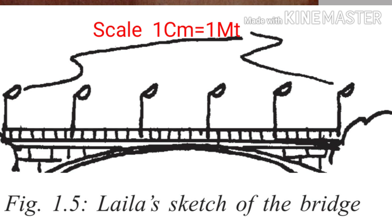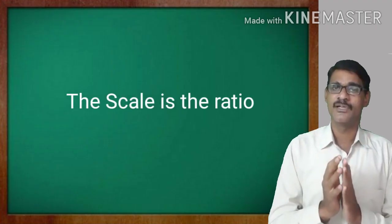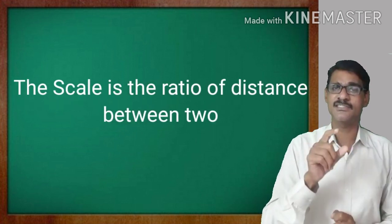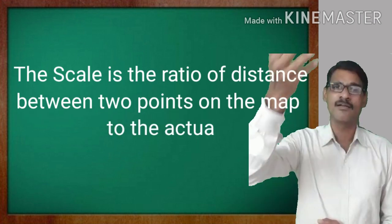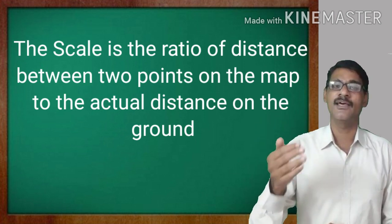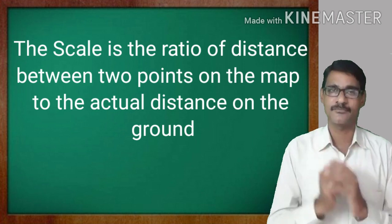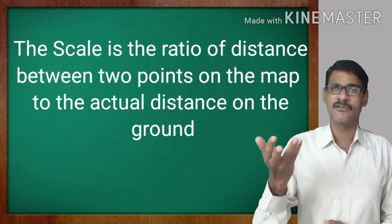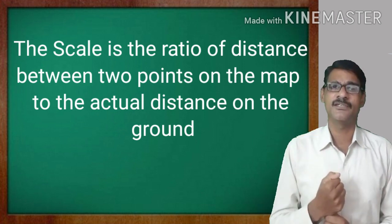This reduction is what we call a scale. Scale is used to show the distance between two points where the actual place is reduced and shown on the map. Scale is nothing but a ratio — a ratio between the distance of two points and the actual place.